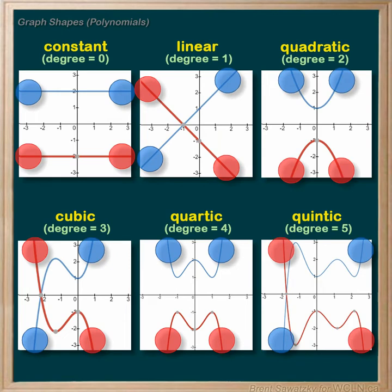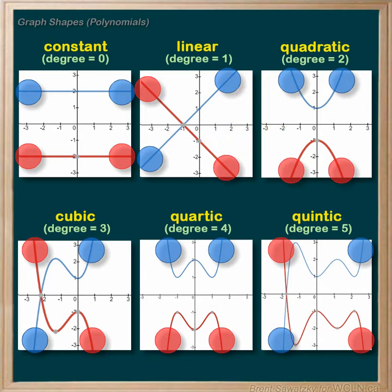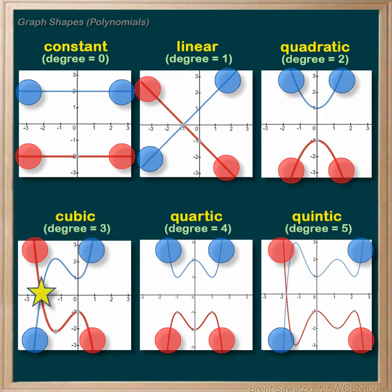Trend number two is related to trend number one and helps us know the minimum number of solutions in polynomial relationships. Recall that a solution is shown on a graph as its x-intercept, where the graph crosses the x-axis. If the positive relationships with odd degrees all start in the bottom left and end in the top right, then they must cross the x-axis at least once. Similarly, negative odd degree relationships going from top to bottom must also cross the x-axis at least once. So the minimum number of solutions for an odd degree polynomial, whether positive or negative, is one.